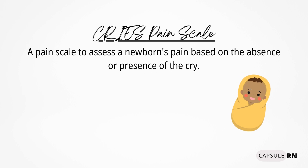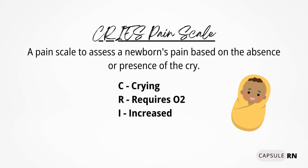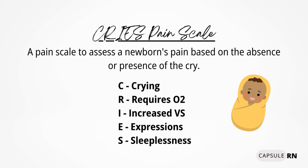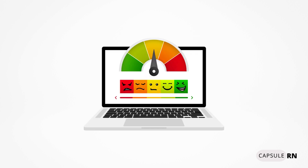The CRIES pain scale is used for newborns, and it is an acronym that stands for five areas that are assessed: crying, requiring oxygen, increased vital signs, expressions, and sleeplessness. Each category is given a rating of 0, 1, or 2, and the scores are tallied to give an overall picture of the newborn's pain level. As a nurse, knowing your patient's pain severity helps you better know what type of ordered PRN pain medication would be most appropriate for the situation.